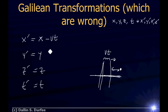But of course the Galilean transformations are wrong because Einstein discovered relativity. The correct transformations that take relativity into account are called the Lorentz transformations. Lorentz figured them out by looking at Maxwell's equations — the equations of electromagnetism give a wave equation for light where the speed of light doesn't change when you transform to different reference frames, unlike a sound wave.